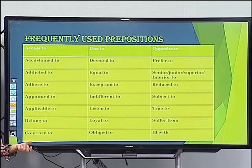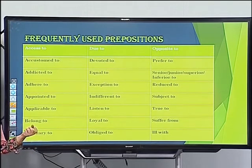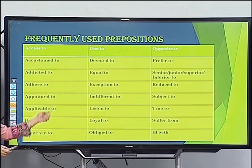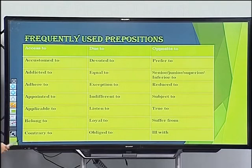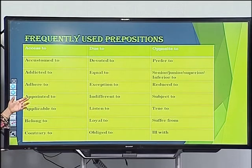'Due to' — we all know this is used when describing a reason. For example, she couldn't come due to illness. 'Due' takes 'to' after it. 'Devoted to' — she is devoted to Lord Krishna. So 'devoted' also takes 'to.'